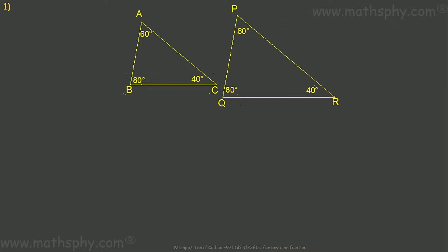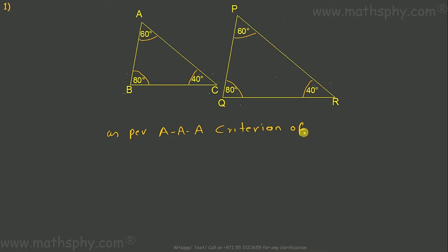For this first pair of triangles, this angle equals this angle, this angle equals this angle, and this angle equals this angle — all the corresponding angles in both triangles are equal. So as per the AAA criteria of triangle similarity, triangle ABC is similar to triangle PQR.